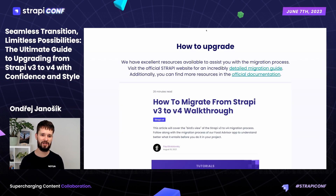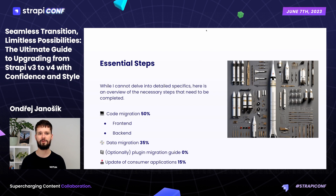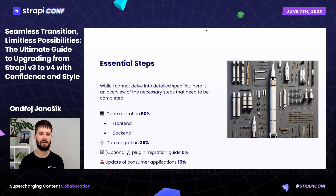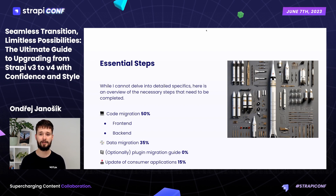Now the question is how. I'd suggest following the official documentation — it's quite well written. To give you an overall idea, the migration consists of a few steps: you need to migrate the code — both backend and admin customizations — then migrate the database because the data structure changed, optionally migrate any plugins you built, and finally update all the consumer applications, since the API responses in Strapi v4 changed — they are standardized and include metadata.